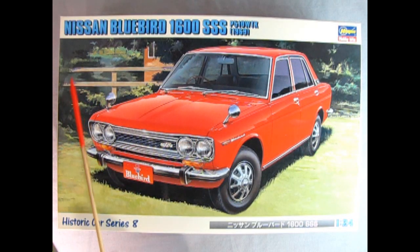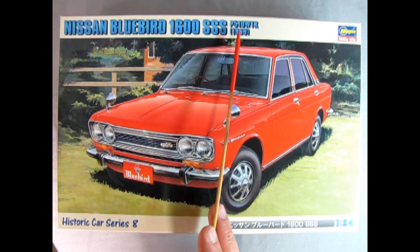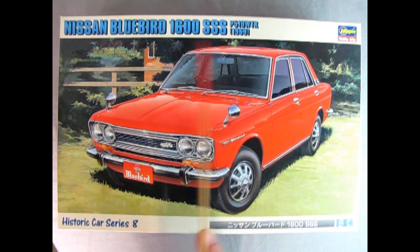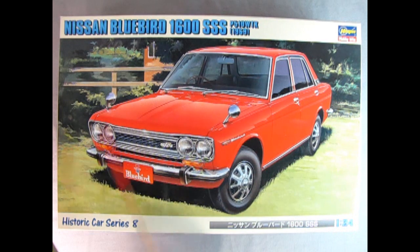So down on our bench we have the Nissan Bluebird 1600 SSS P510 WTK from 1969. This is one of the historic car series number eight from Hasegawa and here you can see the wonderful red car with four doors and those awesome old Datsun hubcaps that they had on here.